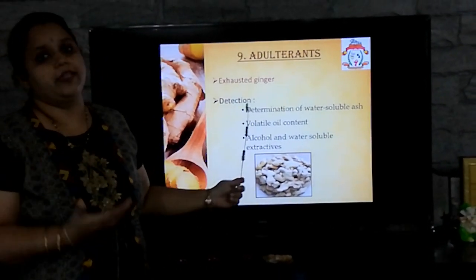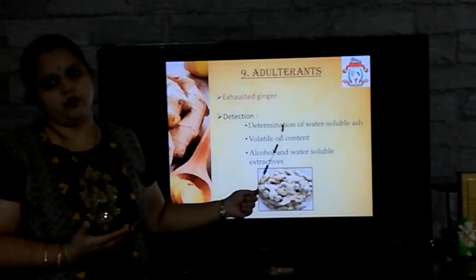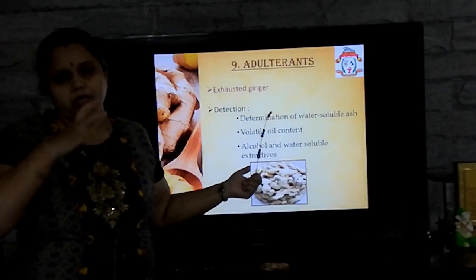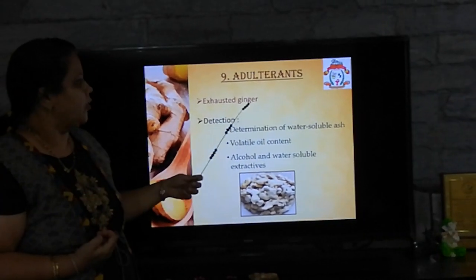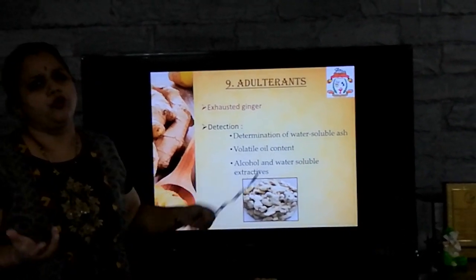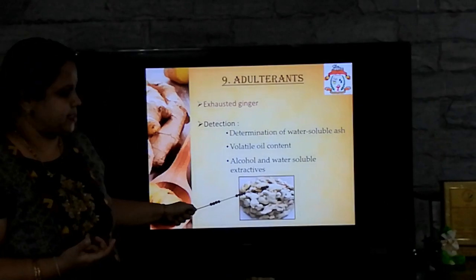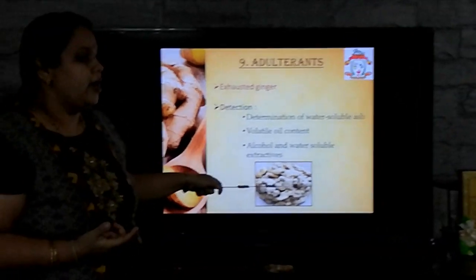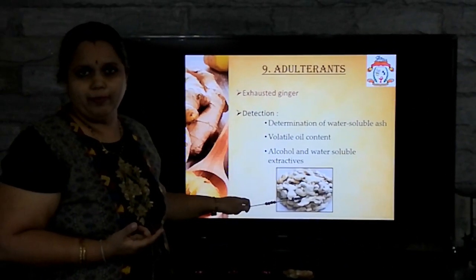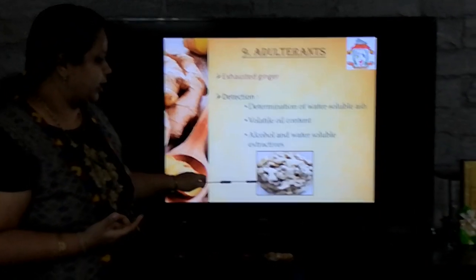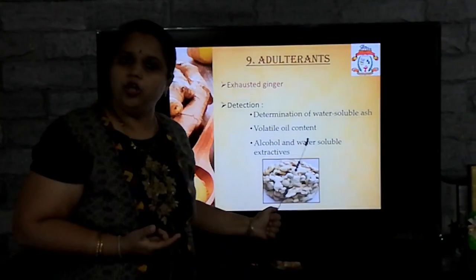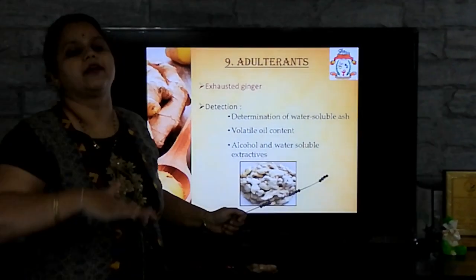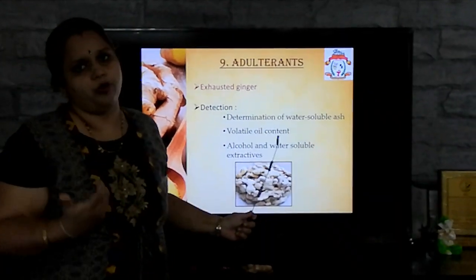Coming to adulterants: ginger is mainly adulterated with exhausted ginger. Exhausted ginger is ginger from which the constituents have already been removed — for example, if subjected to steam distillation, the main component volatile oil comes out and the spent material is passed off as ginger. You can identify exhausted ginger because it will be more shrunken and darker in colour. You can also determine it by performing the water-soluble ash value, or by finding out the extractive values — alcohol-soluble and water-soluble extractive values will be reduced, as the most important constituents would already have been removed.